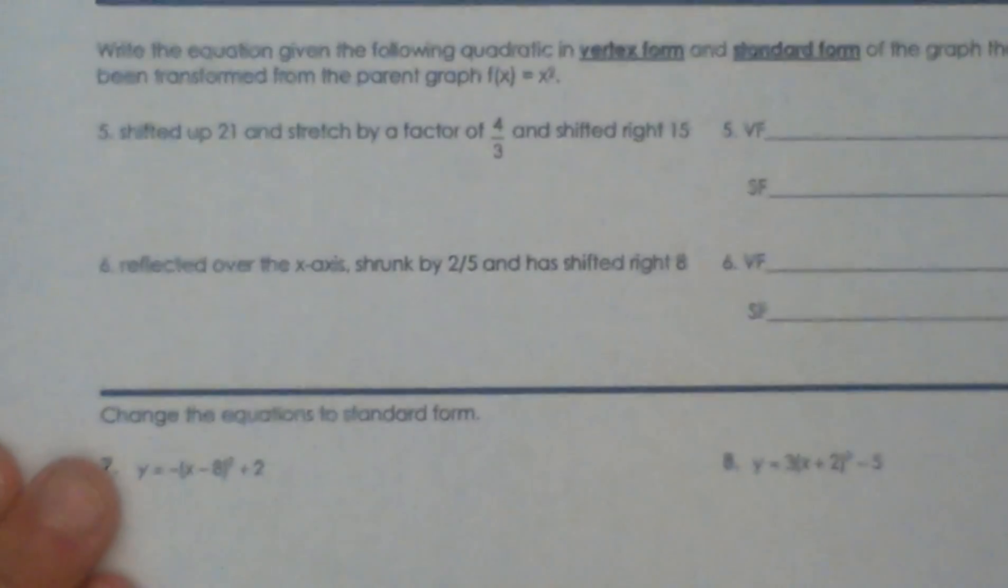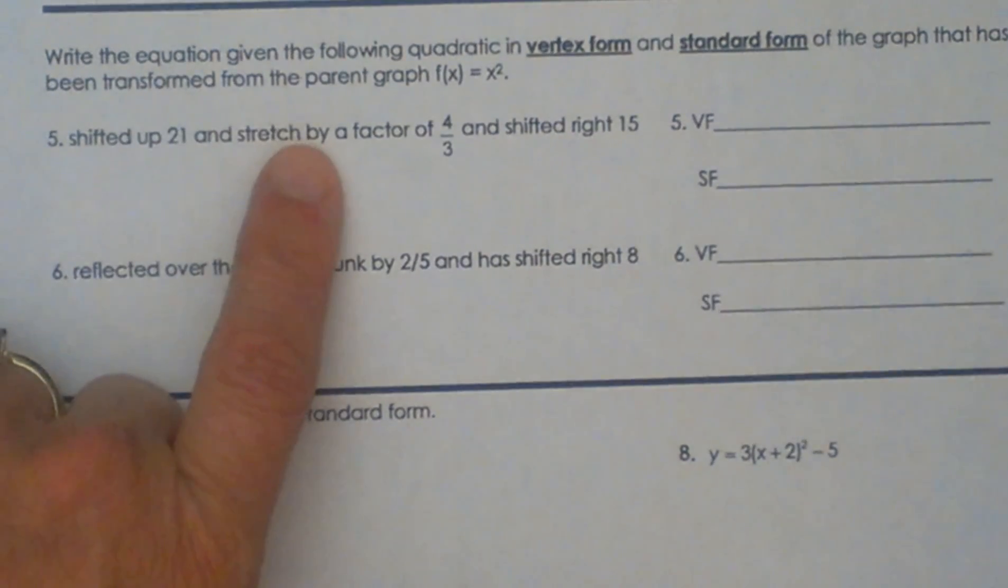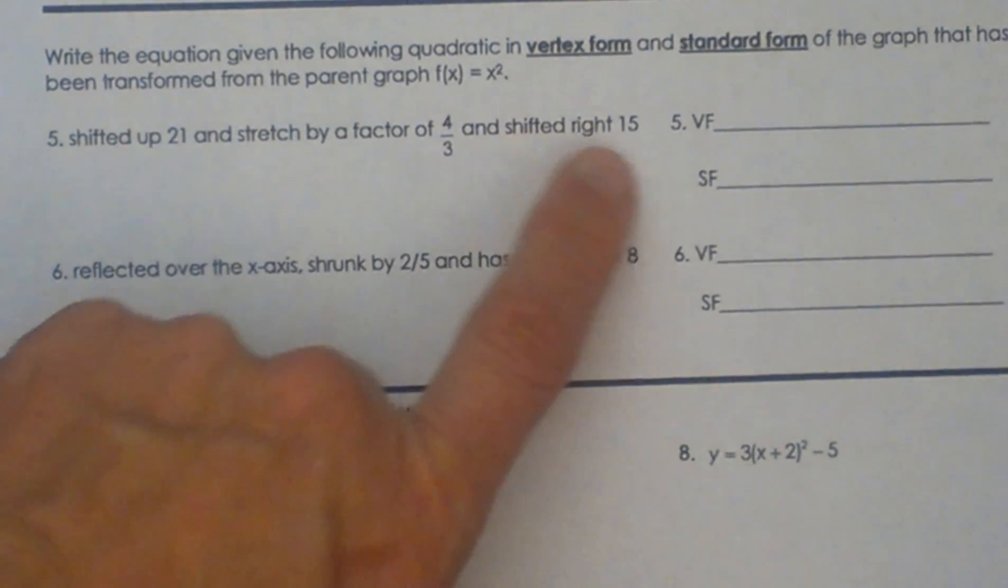Now let's look at a second way to look at those. What if you're given descriptions and you have to write the equation? For example, this says we're shifting up 21, we're stretching by a factor of 4 thirds, and we've shifted right 15.